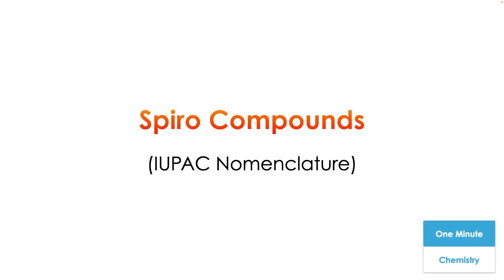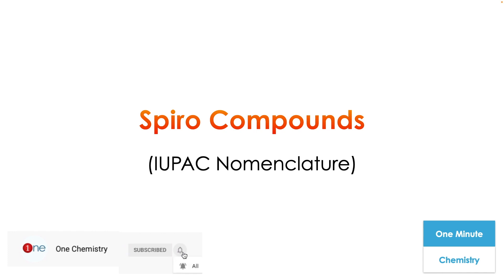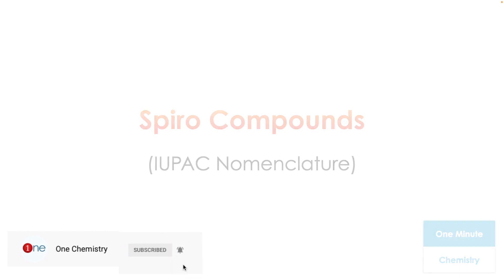Welcome to One Chemistry. This is the One Minute Chemistry series. We are going to quickly see how we can name spiro compounds. We will see the IUPAC nomenclature of it.